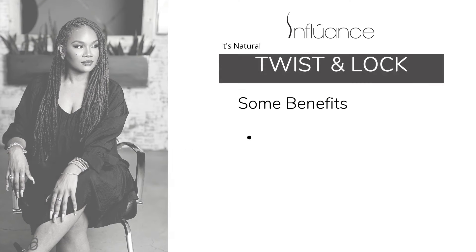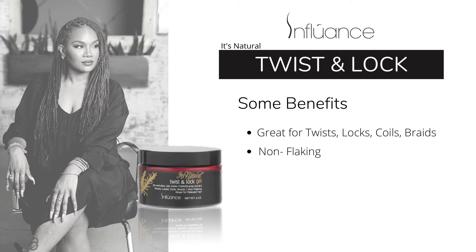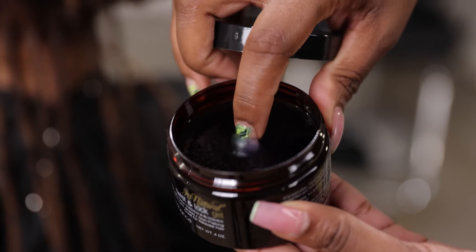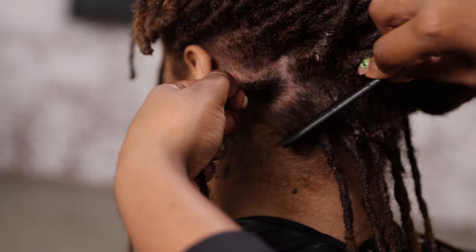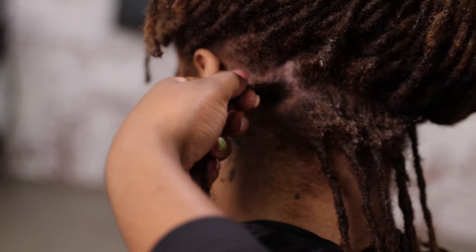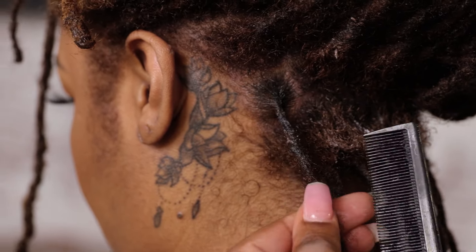Lastly, we will use the twist and lock gel by Influence. Benefits include: great for twists, locks, coils, and braids, and non-flaking. To begin the retwist, part hair into sections, apply twist and lock gel, and twist hair with fingers.